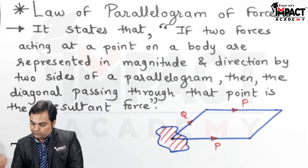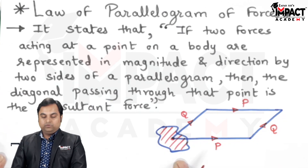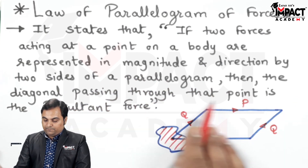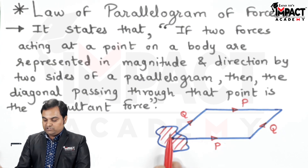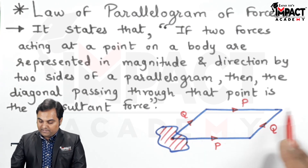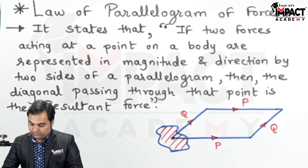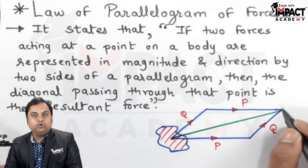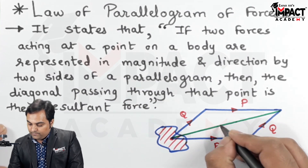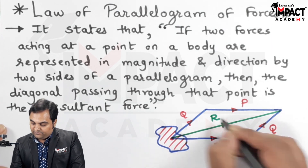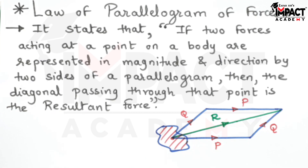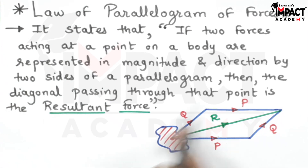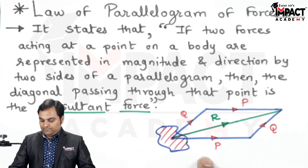Here also we have force P and this is force Q. As per the statement, the two sides of a parallelogram — the diagonal passing through that point, through the point where the forces are generating — when we pass a diagonal from that point, that diagonal would represent the resultant force. That is, we can replace forces P and Q by this single force shown here with the green line, and that is the resultant force.